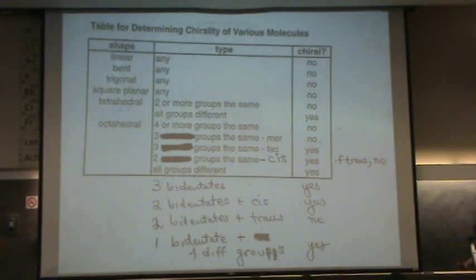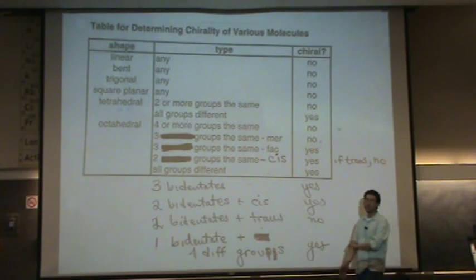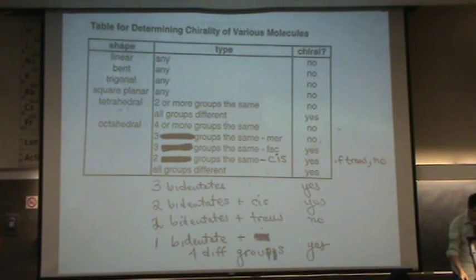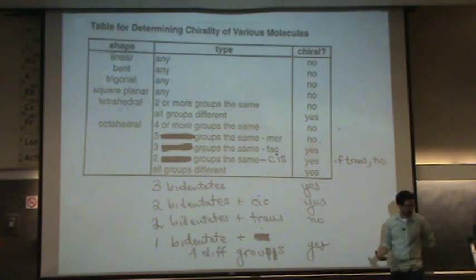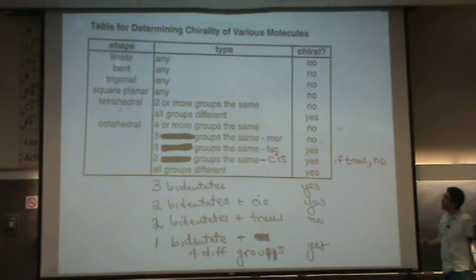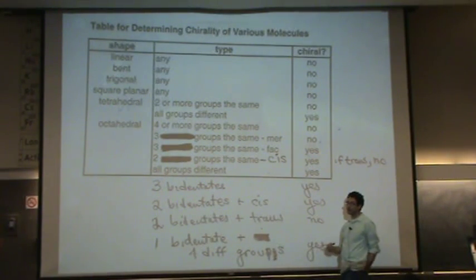Square planar can have cis and trans, but that is not necessarily related to chirality. Even if there's a cis square planar or a trans square planar, it's not going to be chiral — if you drew the mirror image, you'd see they'd be identical. Now, tetrahedral — here's where we start to get to chirality. If you have a tetrahedral VSEPR shape, it is chiral only if all four ligands are different. If all four groups are different, it will be chiral, no matter what. If two or more of the groups are the same, it's not going to be chiral.